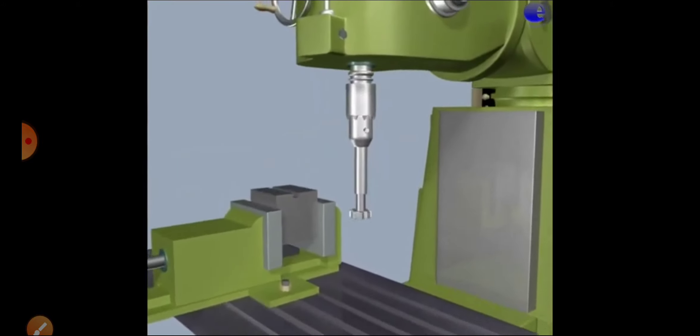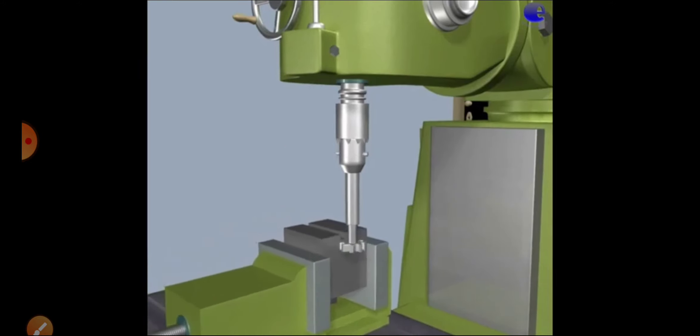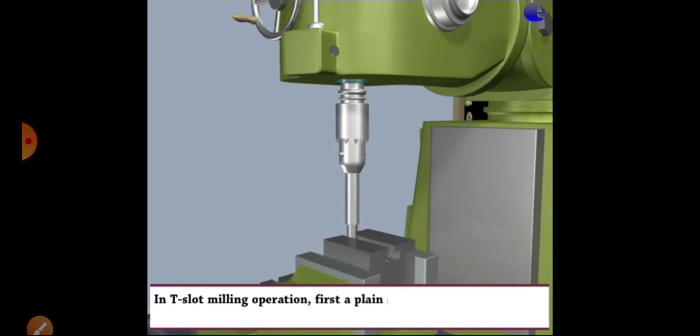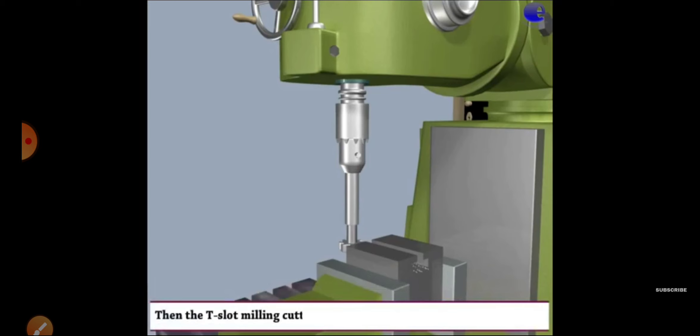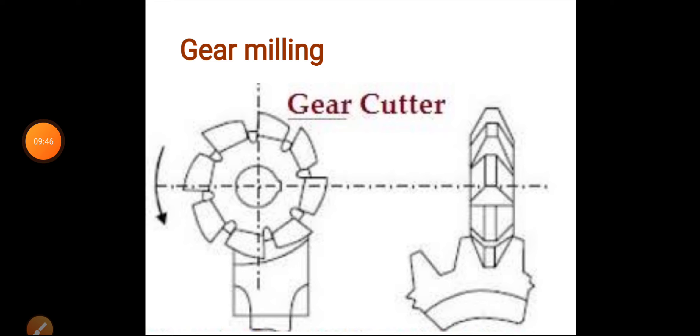Next is T-slot milling. As we have taken examples many times before, the work table of the milling machine has T-slots cut in it. That is done by the use of this T-slot milling cutter.